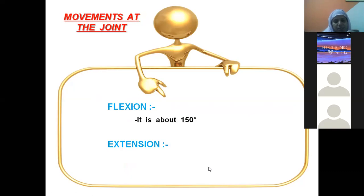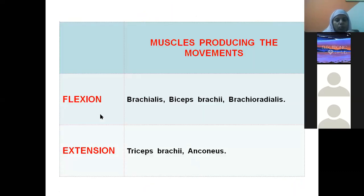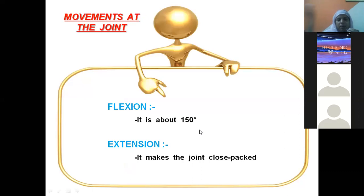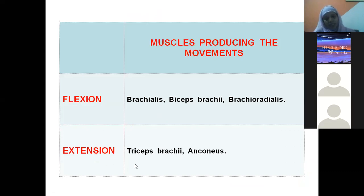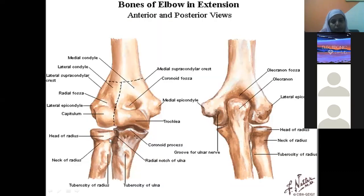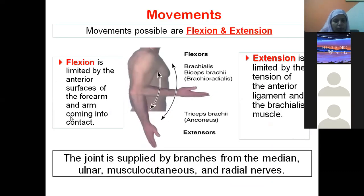The movements of the elbow joint are flexion — up to 150 degrees — and extension. Muscles producing flexion include brachialis, biceps brachii, and brachioradialis. Extension is produced by triceps and anconeus.